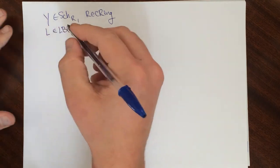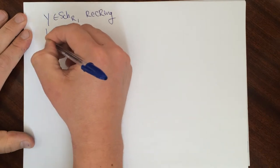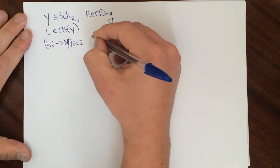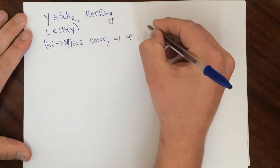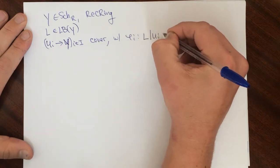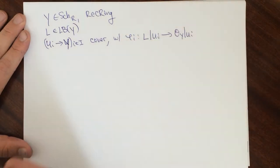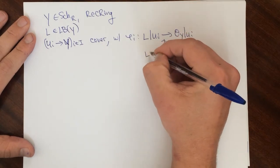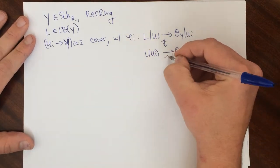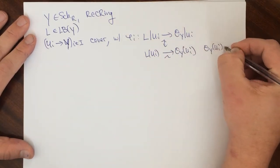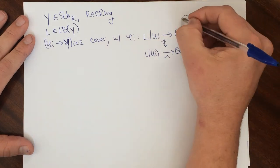What we can do is fix a trivializing cover U_i → Y for some index set. This is going to be a cover with trivializations from L restricted to U_i to O, the structure sheaf of Y restricted to U_i. Since this is quasi-coherent, this is really the same thing as O_Y(U_i). So we can have an isomorphism of O_Y(U_i)-modules. These are going to be the trivializations.